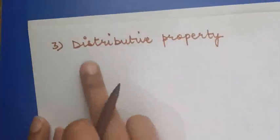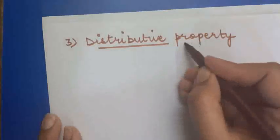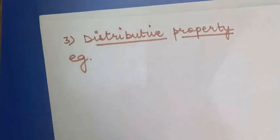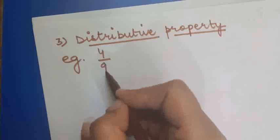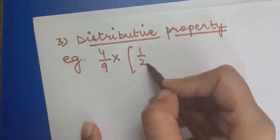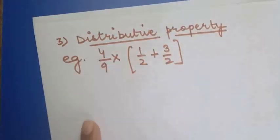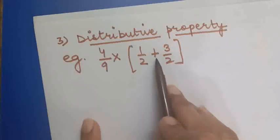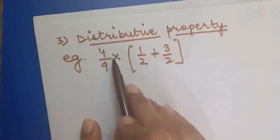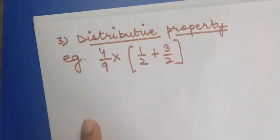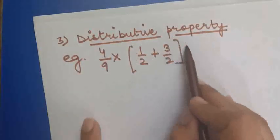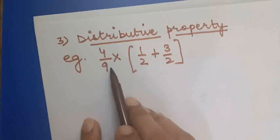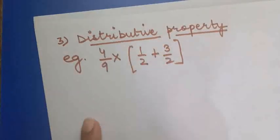Now we will move on to the next property: the distributive property. This is also a very important property of multiplication. For example, we are taking 4 upon 9 multiplied by the bracket 1 upon 2 plus 3 upon 2. There is a bracket containing two rational numbers with a plus sign between them, and we have to multiply this bracket with 4 upon 9.